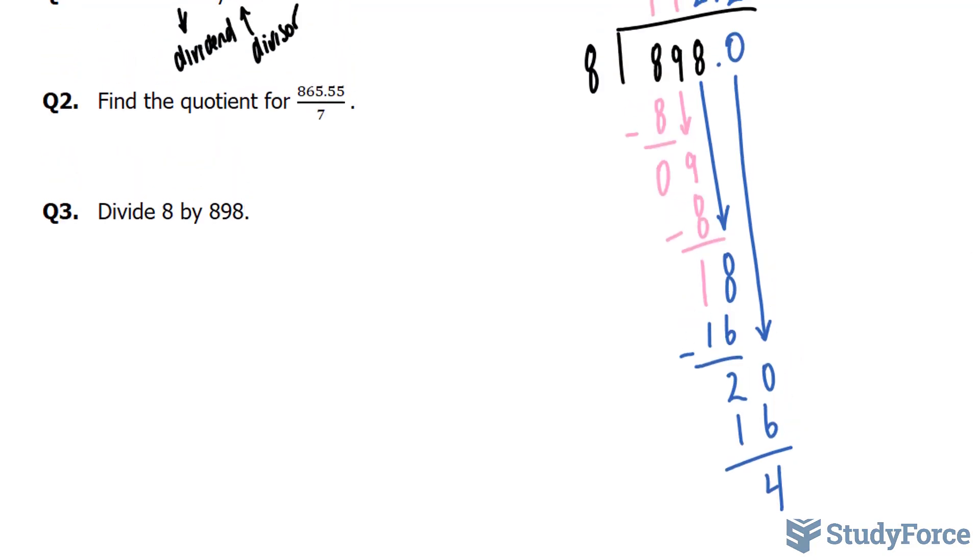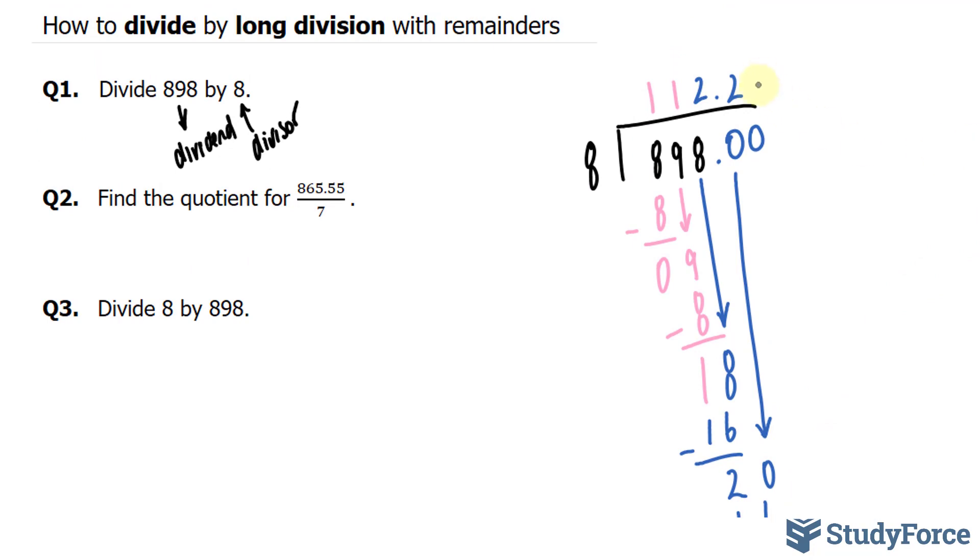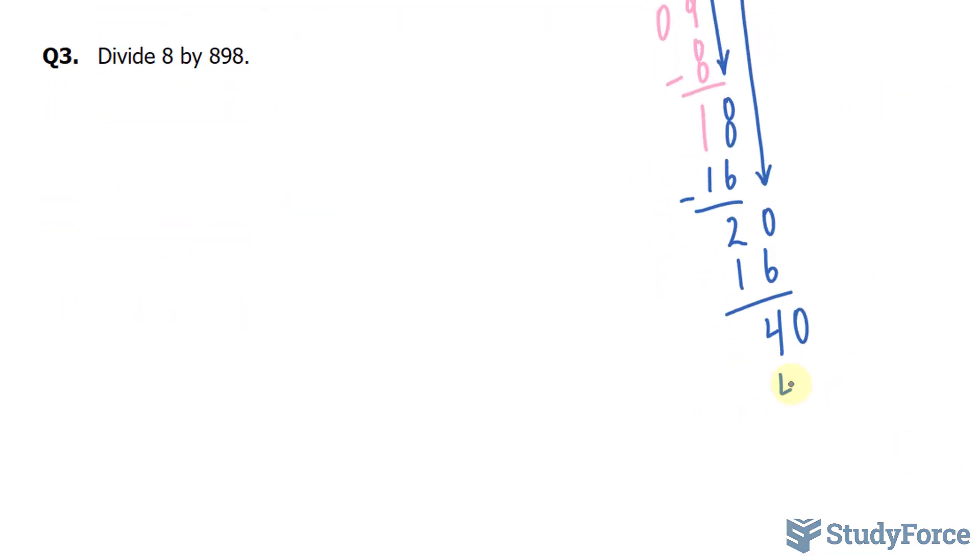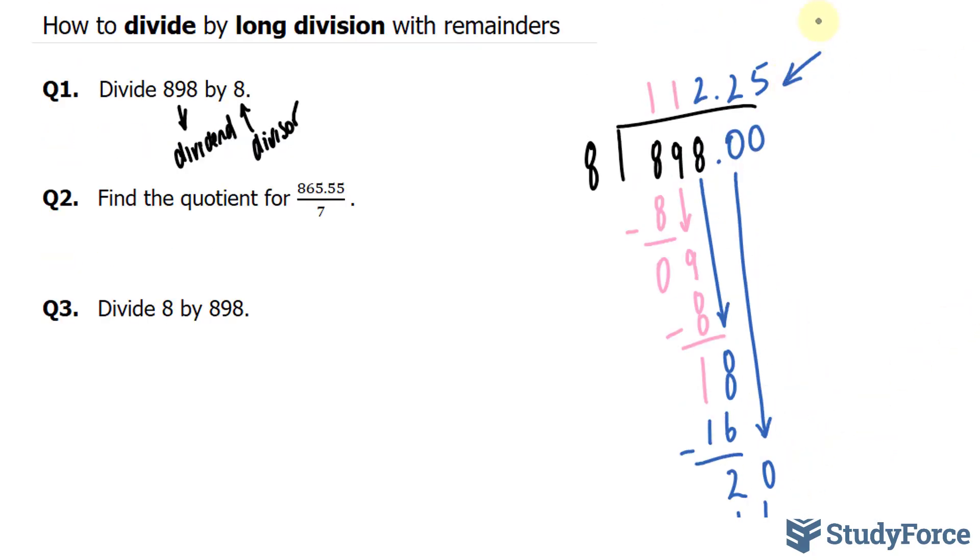We still have another remainder, this 4. So we introduce another 0. Bring that 0 down. 8 fits into 40, 5 times exactly. 5 times 8 is equal to 40, with no remainder. And this is our exact quotient.